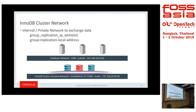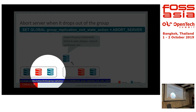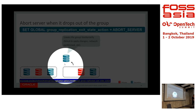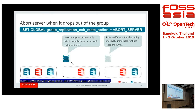When a server is cut from the network and leaves the group, it times out and shuts down — we call this abort server. But this may not always be good, because if the server shuts down, you may have trouble determining whether to restart it or why it shut down. If it just goes offline, you can look at the warnings and tell what happened. That's why we have the exit state action.